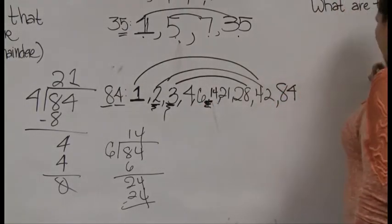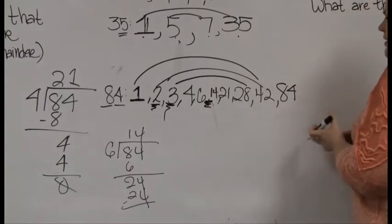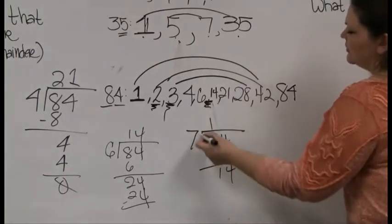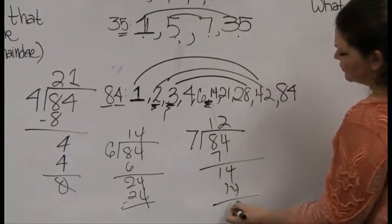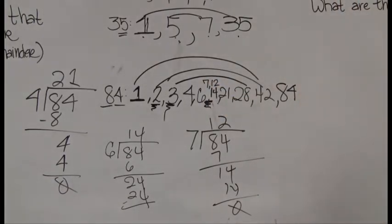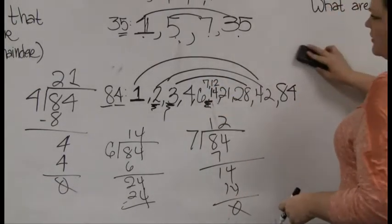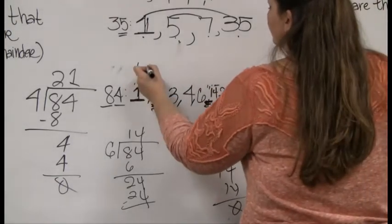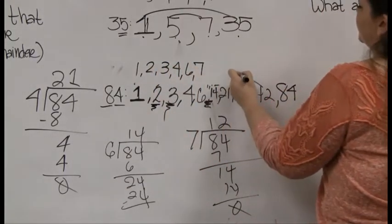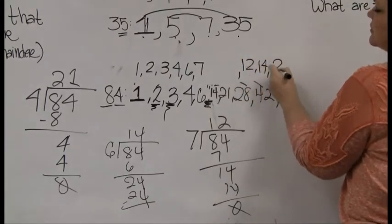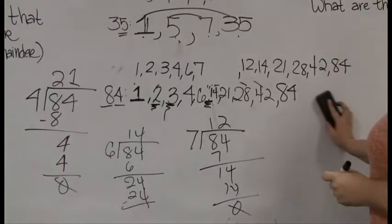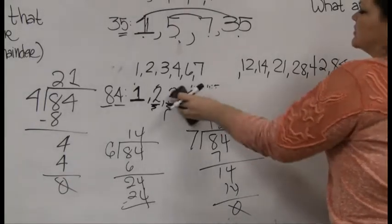Still have numbers to check between 6 and 14. Next number to check is 7 — there's no divisibility trick for 7, so you just have to divide. 7 goes into 84 with no remainder, so I have a 7 and a 12 in my factor rainbow. It's getting really messy, let me rewrite it. So far I have: 1, 2, 3, 4, 6, 7 on one side and 12, 14, 21, 28, 42, 84 on the other.